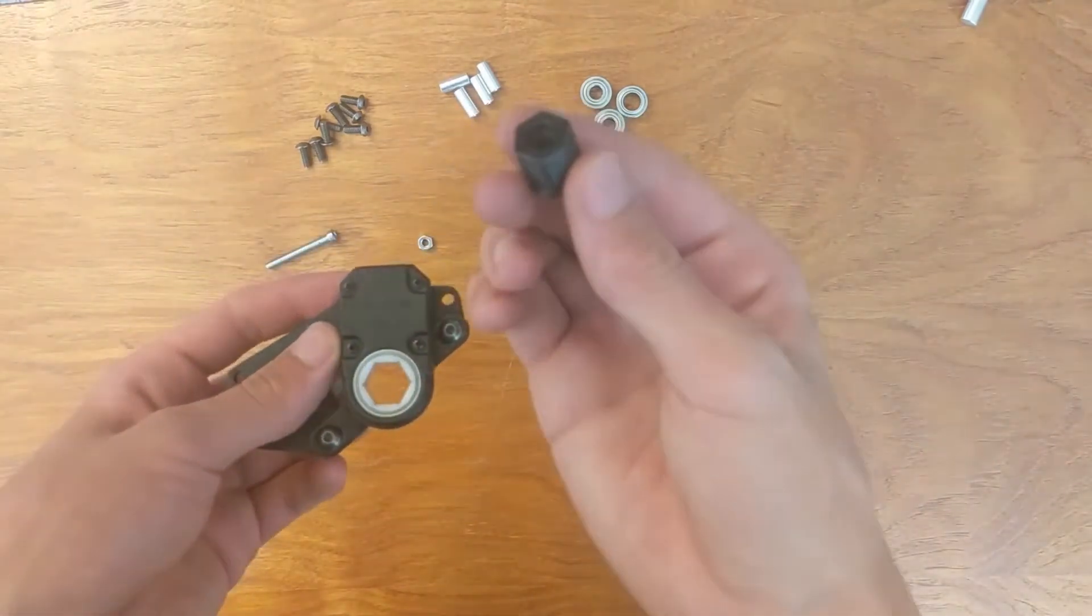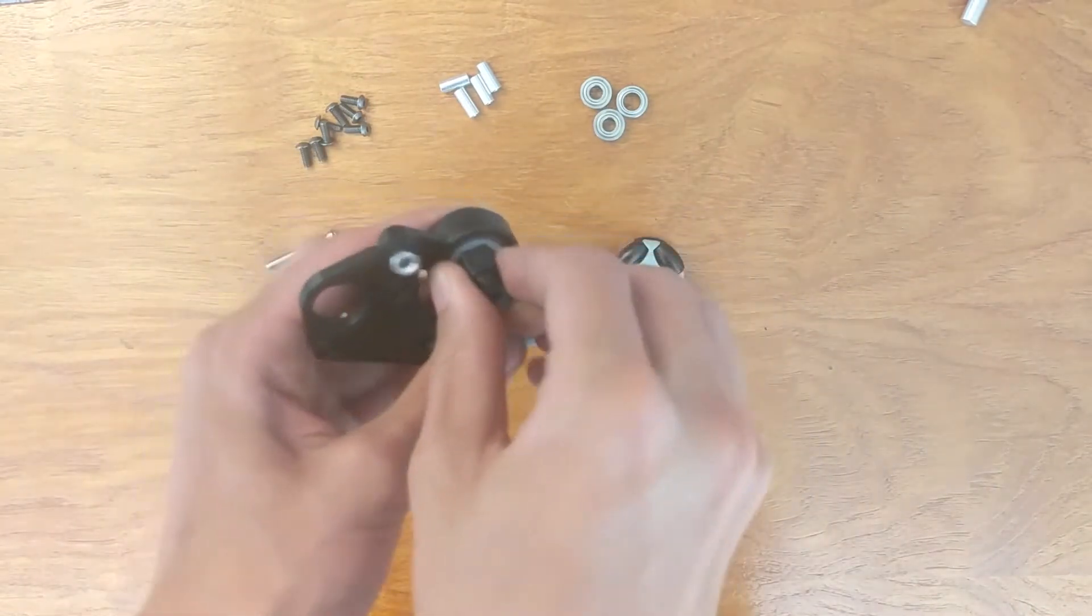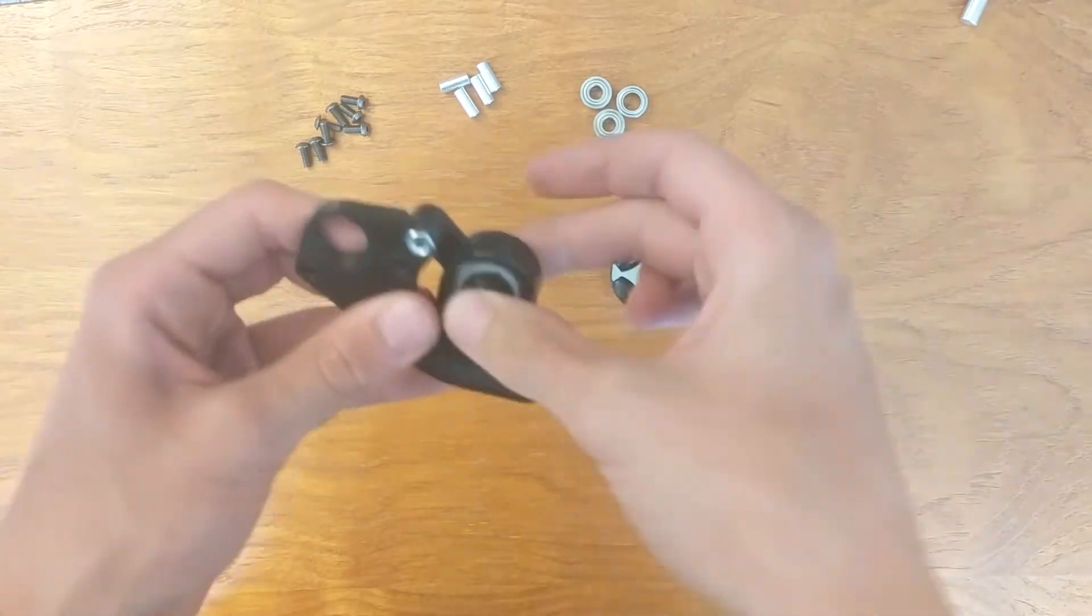Once you've screwed both screws in and attached the plate, take the half-inch hex insert and insert it into the back of the encoder like this. It should snap right in and shouldn't be able to wiggle or anything.